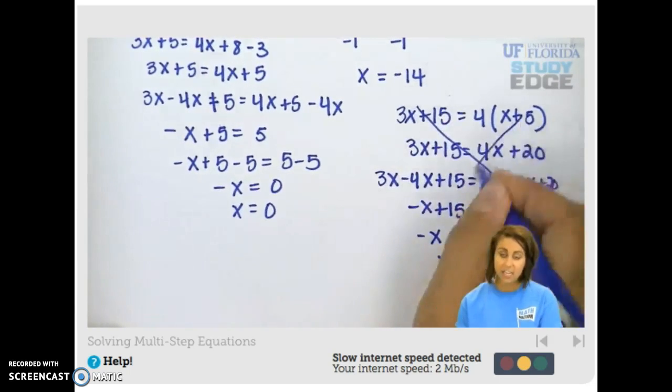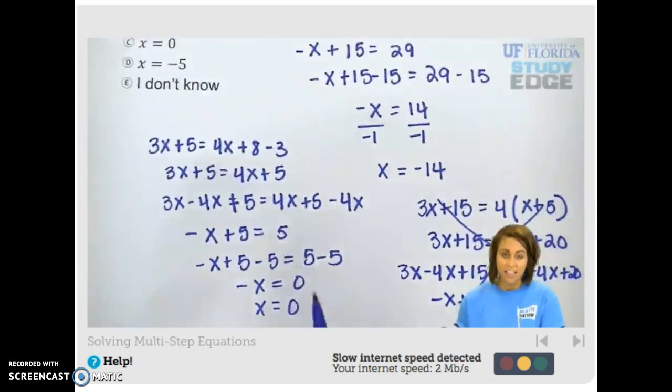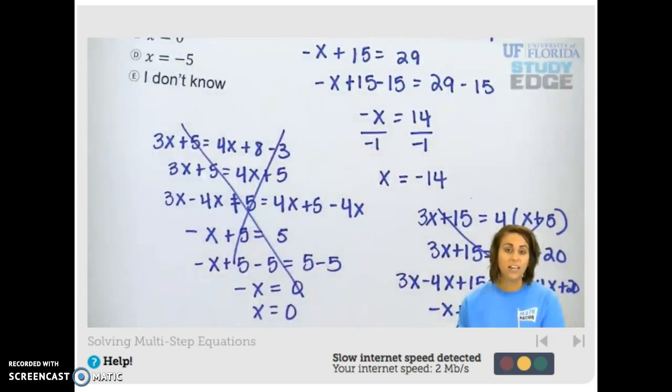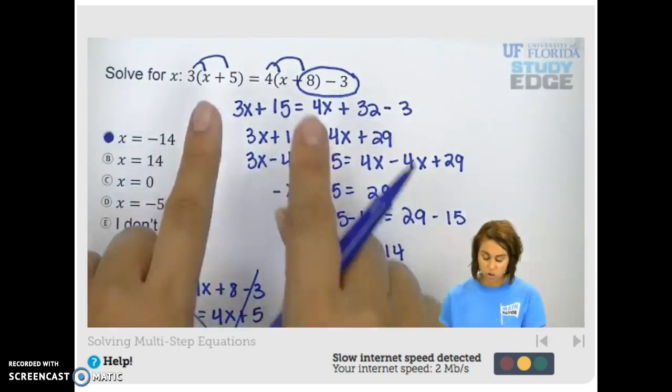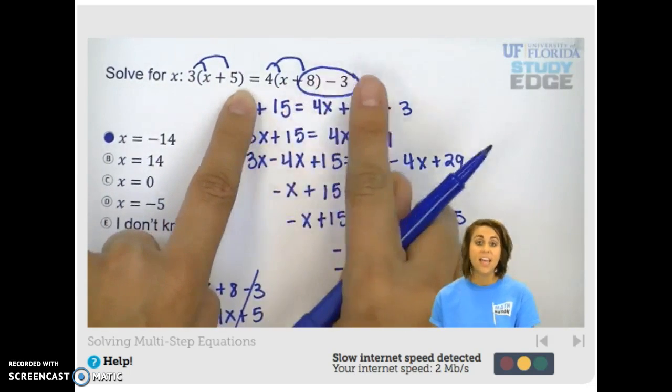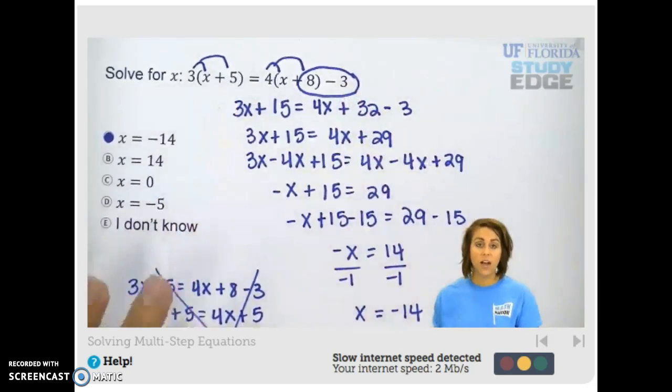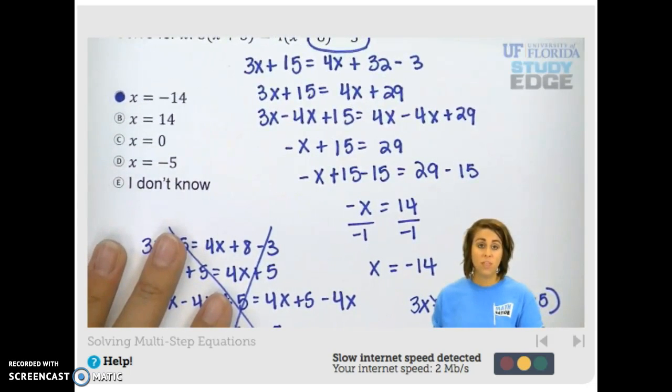Again, this is the incorrect way to do it. The correct way to do it is to distribute through your binomial at the very beginning, then subtract your 3 on the right, and solve for x from there.